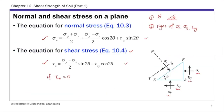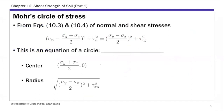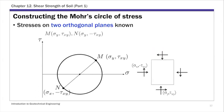Starting from equations 10.3 and 10.4, you can derive a relationship between sigma_xy and tau_xy. This equation is basically the equation of a circle — this is called the Mohr circle. The Mohr circle equation gives you the center and the radius of the Mohr circle in terms of the horizontal and vertical stresses sigma_x, sigma_y, and the shear stress tau_xy.